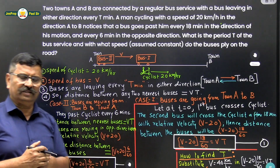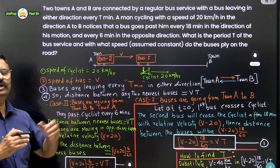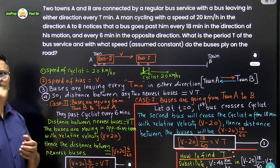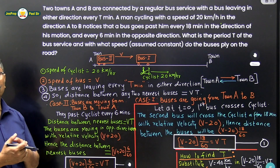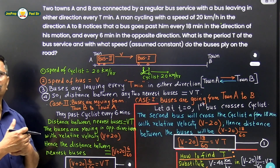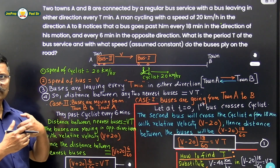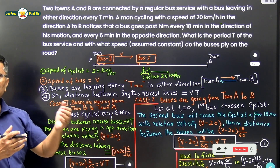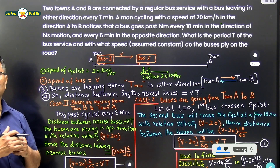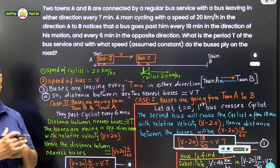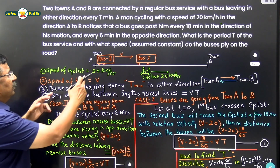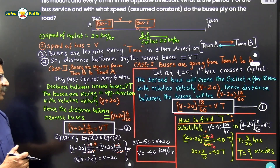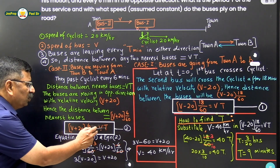Now let us consider the second case: buses moving from town B to town A, i.e., in the opposite direction of the cyclist. These buses also move with speed V, so the separation between two consecutive buses is V into T. Since these buses cross the cyclist every 6 minutes and are moving in the opposite direction, their relative velocity is V plus 20. Therefore V plus 20 multiplied by 6/60 equals V into T, giving us Equation 2.